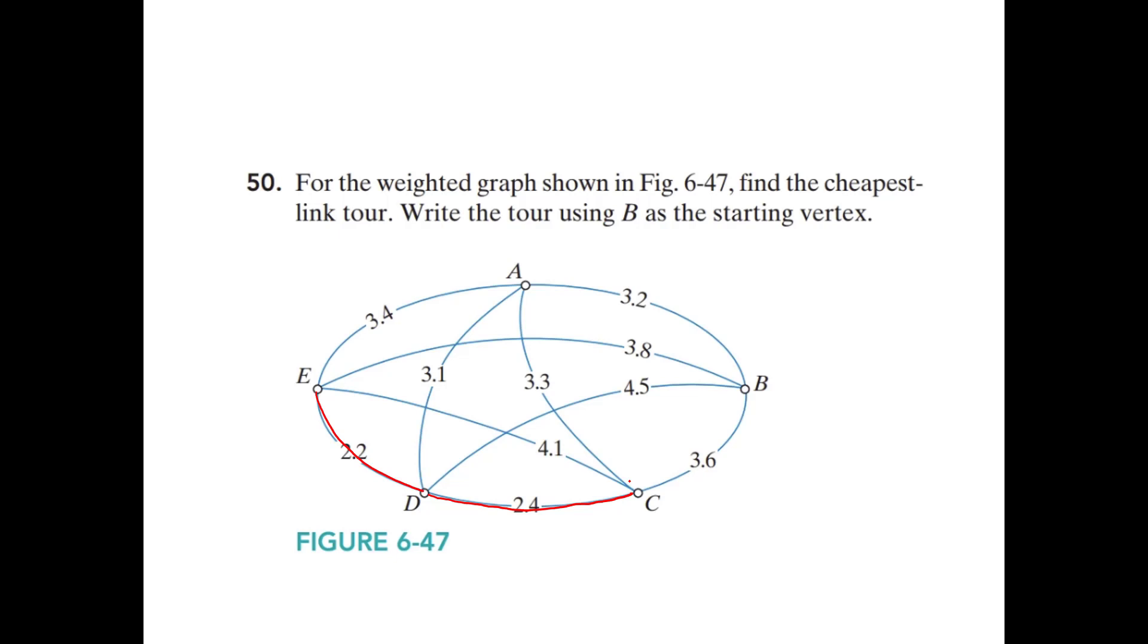So the next cheapest link is the link that connects D and A that has a weight of 3.1. But if we use that one, then we would have three edges coming out of vertex D, which would tell us that in our circuit, we would travel past D twice. So it would not be a Hamilton circuit, so we can't use that edge. 3.1, next comes 3.2, and then 3.2. We're connecting these right here. Right there by using that edge, we're not closing a circuit. We're not having three edges coming out of one vertex, so that's good.